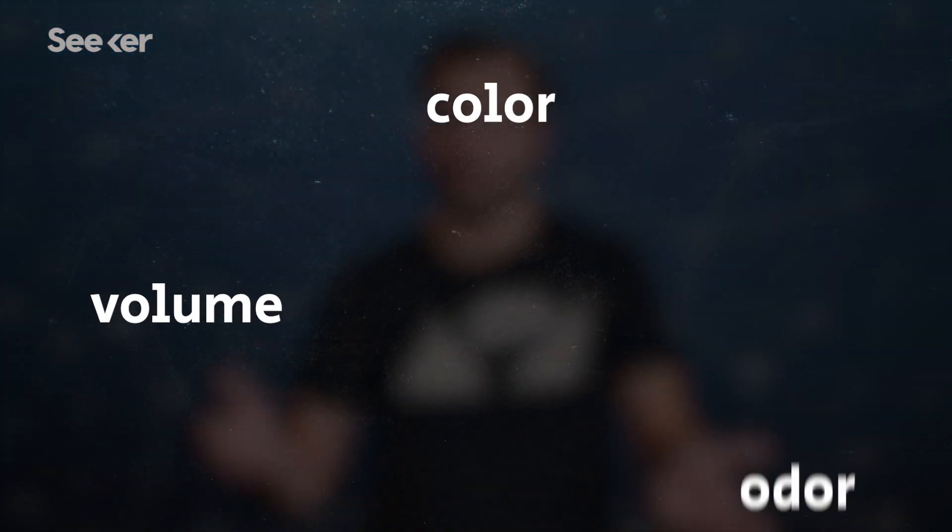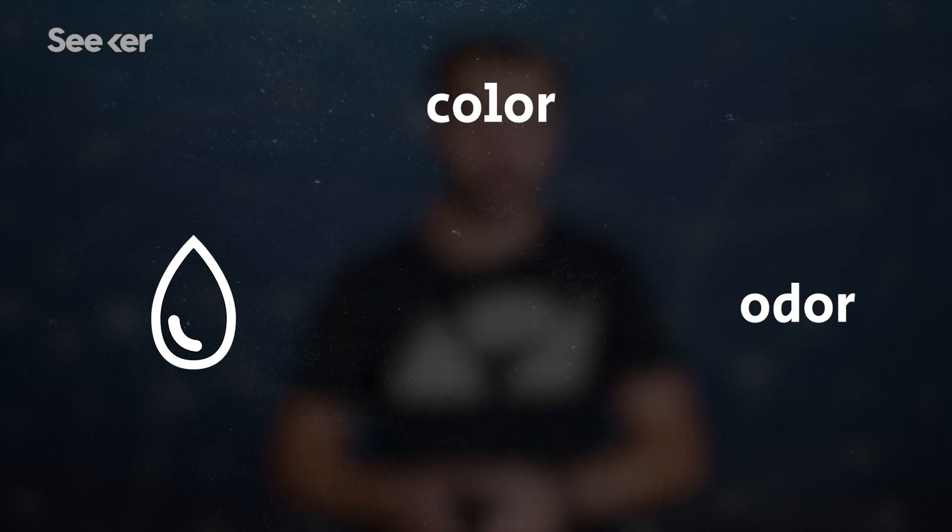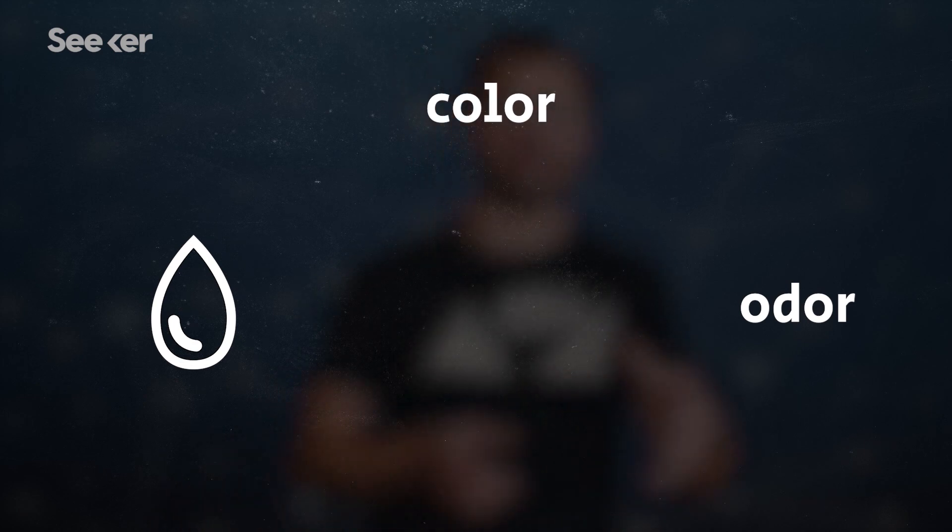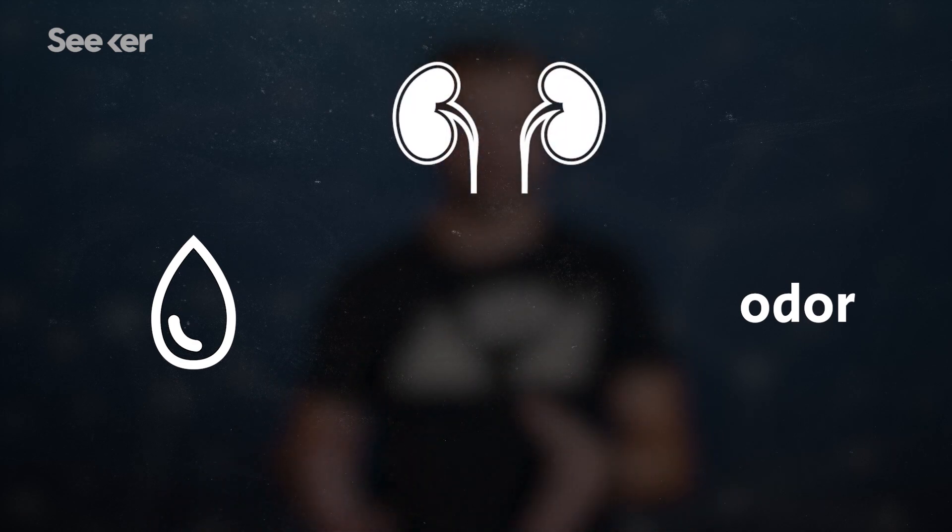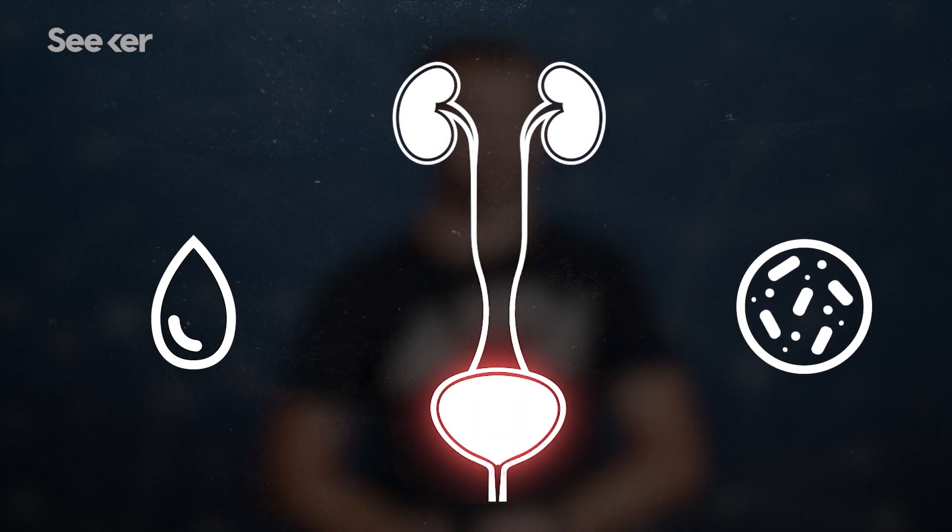But doctors are also scanning your pee for a few other key, obvious things. Volume, color, and odor. Volume could tell doctors how hydrated or not you are. Color could indicate if someone's kidneys are functioning properly, and cloudy urine could mean a UTI. A very strong odor could mean a serious infection.